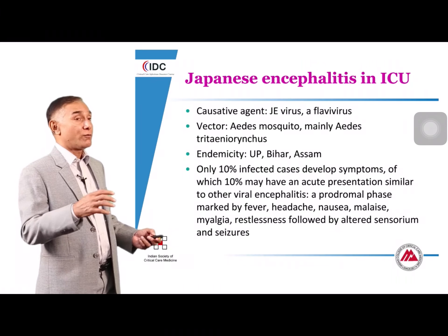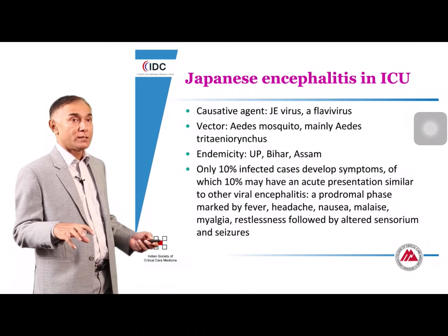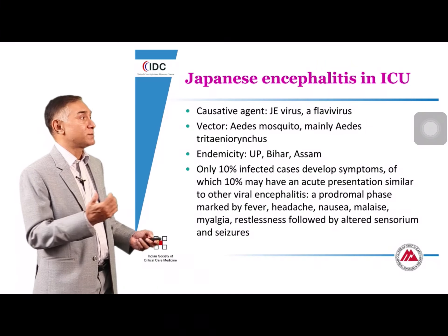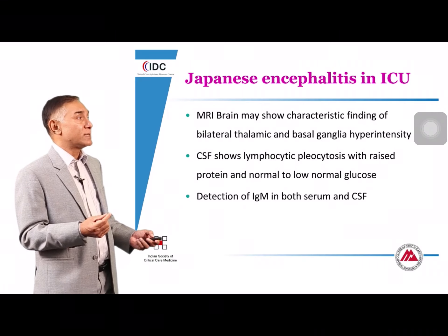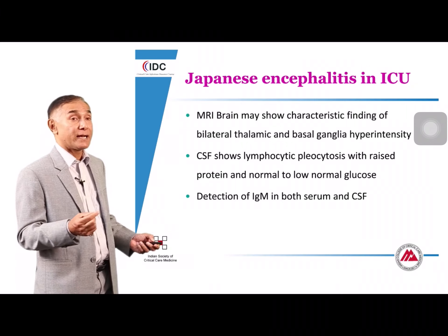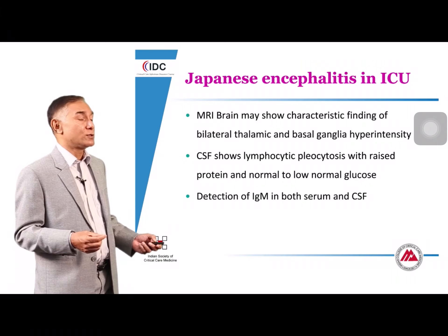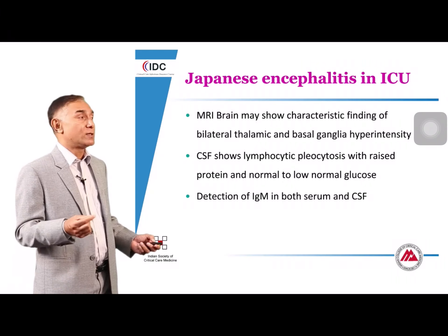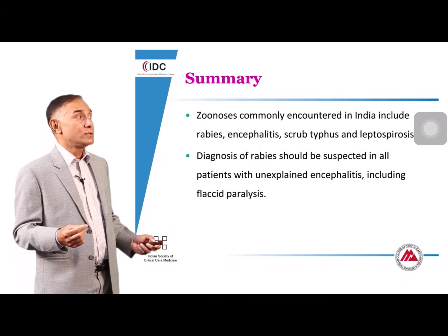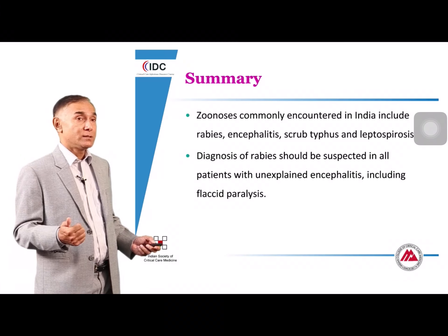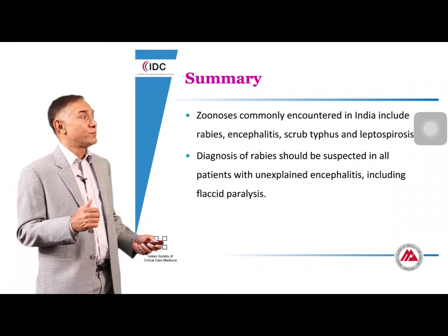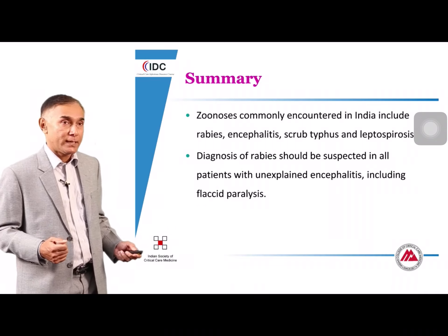Japanese encephalitis is another important zoonosis in India. Suspect it in patients from rural areas or areas with the appropriate vector epidemiology — mosquitoes, pigs, and rice farms. Patients present with non-specific encephalitis, but MRI may show bilateral thalamic and basal ganglia hyperintensities, and CSF shows lymphocytic pleocytosis. Most public health laboratories can assist with IgM testing in both serum and CSF. In summary, zoonoses commonly encountered in India include rabies, encephalitis, scrub typhus, and leptospirosis; rabies should be suspected in all patients with unexplained encephalitis, including those with flaccid paralysis.